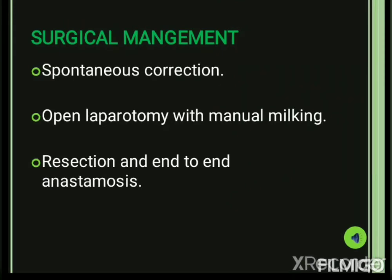Surgical management of intussusception involves correction of the telescoped region of the intestine, using either laparotomy or laparoscopic procedure. Under laparoscopic procedure, a few incisions are made and the telescoped intestines are pulled to normal position and reduced. In laparotomy, open surgery of the abdominal wall is performed and the telescoped region is manually milked back to normal position. In severe cases where gangrene has formed, the gangrenous part is removed and end-to-end anastomosis is performed.